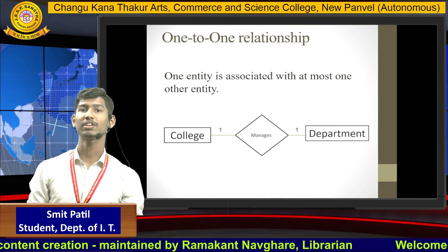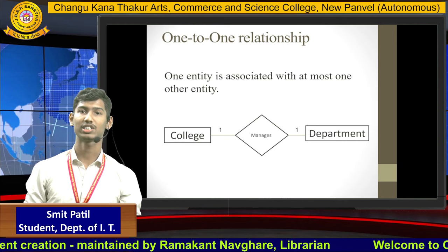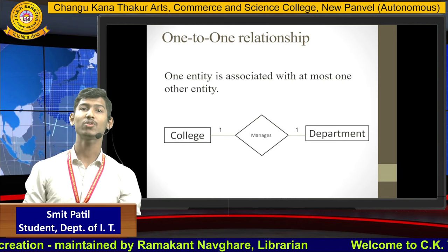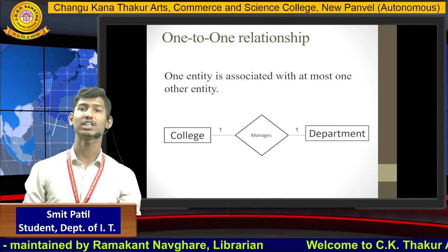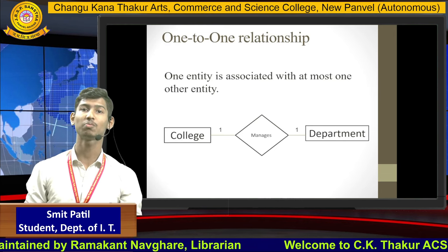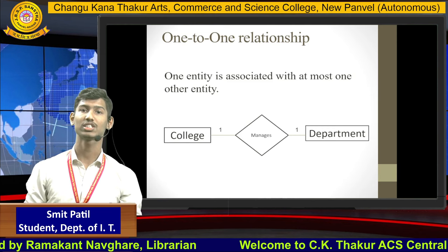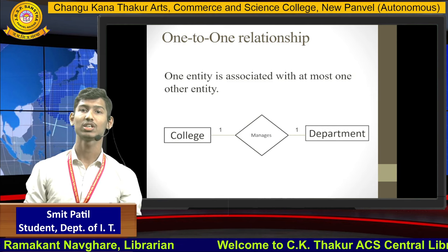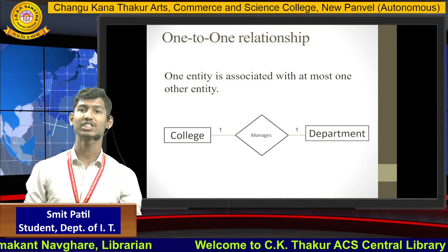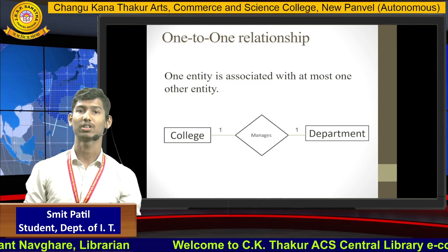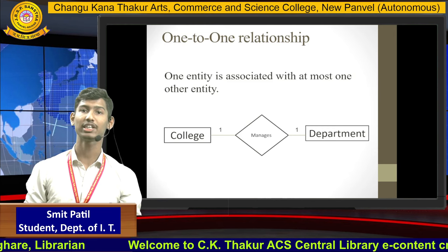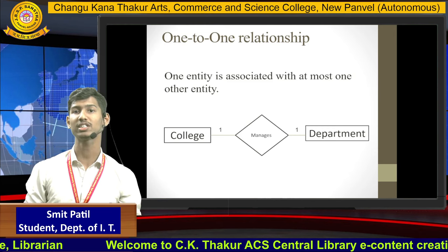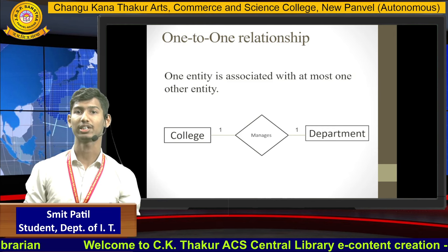Starting with one-to-one relationship: one entity is associated with at most one other entity. For example, a college manages a department — college is one entity and department is the other entity.